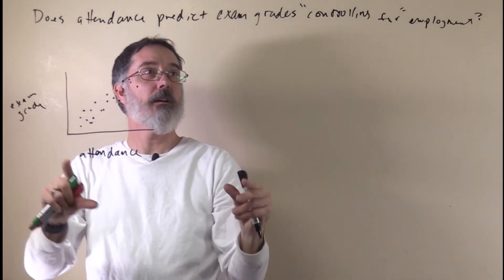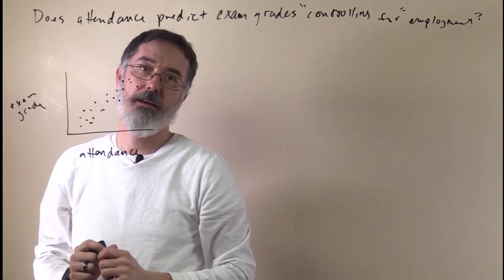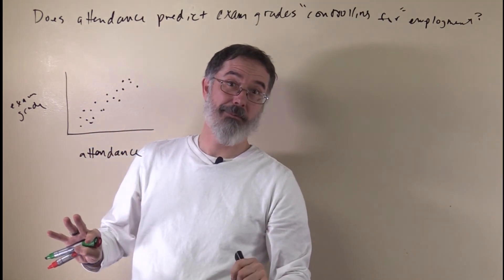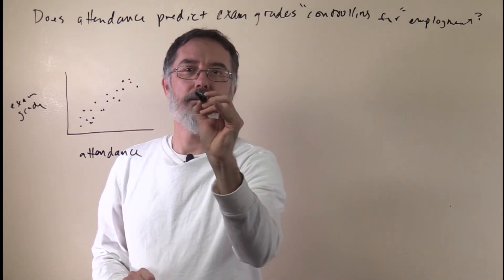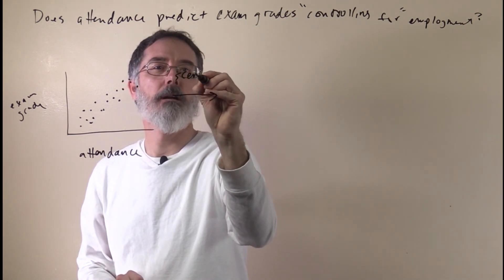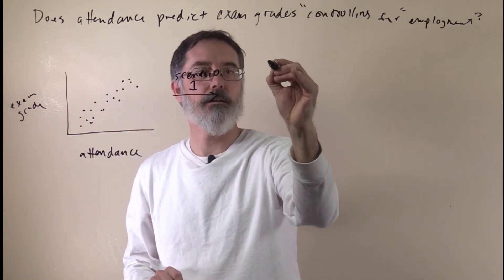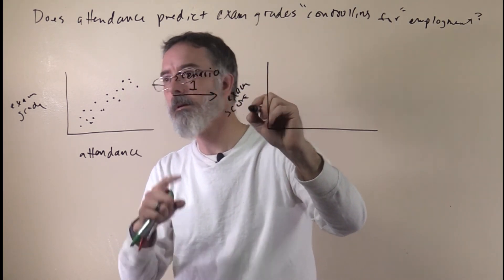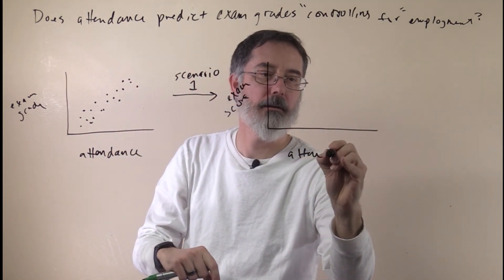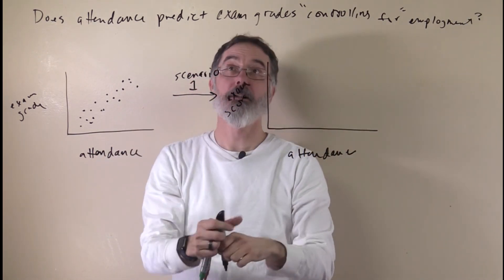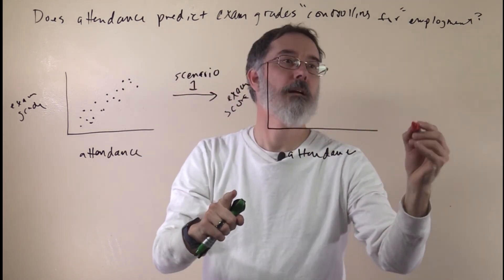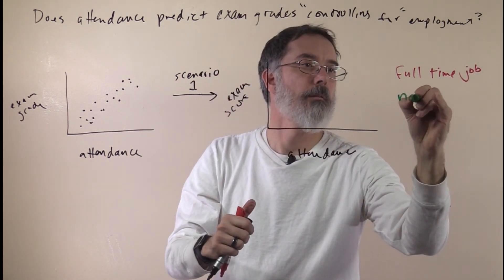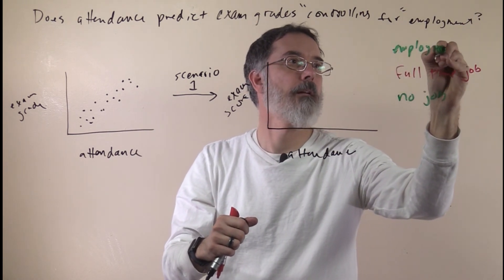Now we also ask these exact same participants if they have a full-time job or not. We will say that people either have a full-time job or they are completely unemployed, which means they are probably focusing a lot on being a student. We are going to consider two different scenarios. We will call this scenario number one, with the exact same people and data. I will use red for people with a full-time job, and green for people with no job — this is employment status for these students.